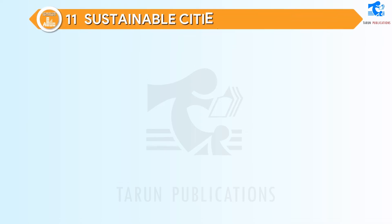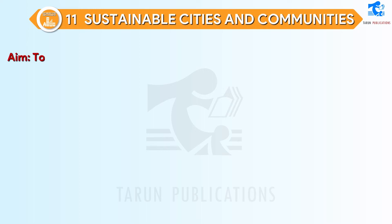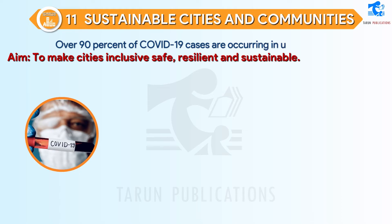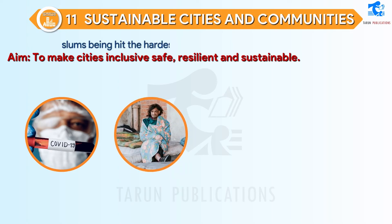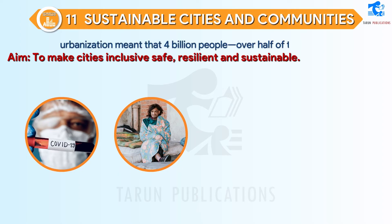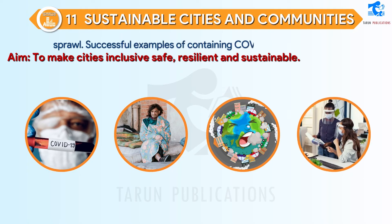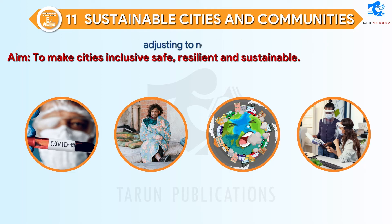SDG 11: Sustainable Cities and Communities. Aim: to make cities inclusive, safe, resilient, and sustainable. Over 90% of COVID-19 cases are occurring in urban areas, with the 1 billion residents of the world's densely populated slums being hit the hardest. Even before the coronavirus, rapid urbanization meant that 4 billion people — over half of the global population — in the world's cities faced worsening air pollution, inadequate infrastructure and services, and unplanned urban sprawl. Successful examples of containing COVID-19 demonstrate the remarkable resilience and adaptability of urban communities in adjusting to new norms.